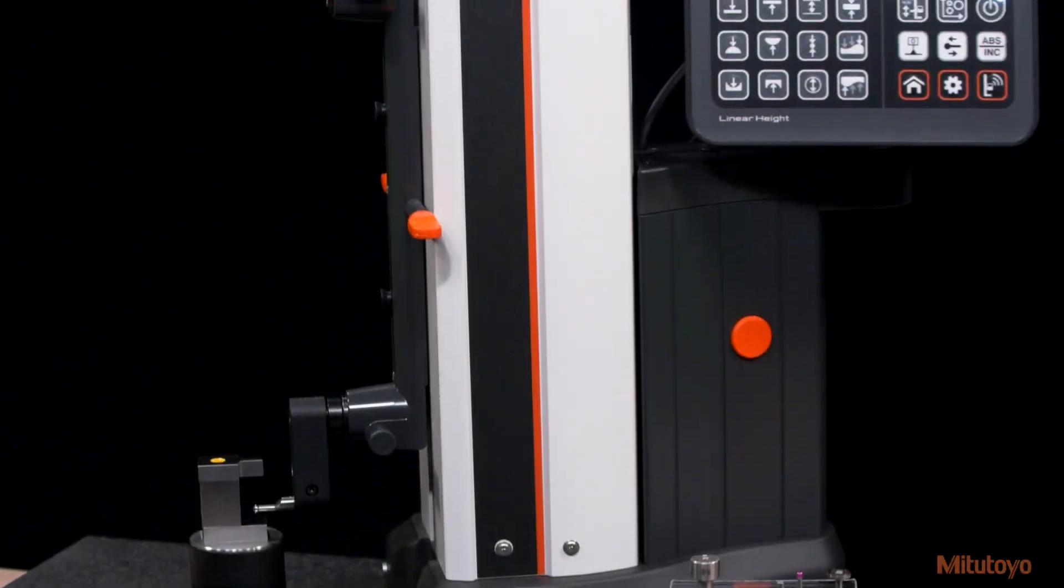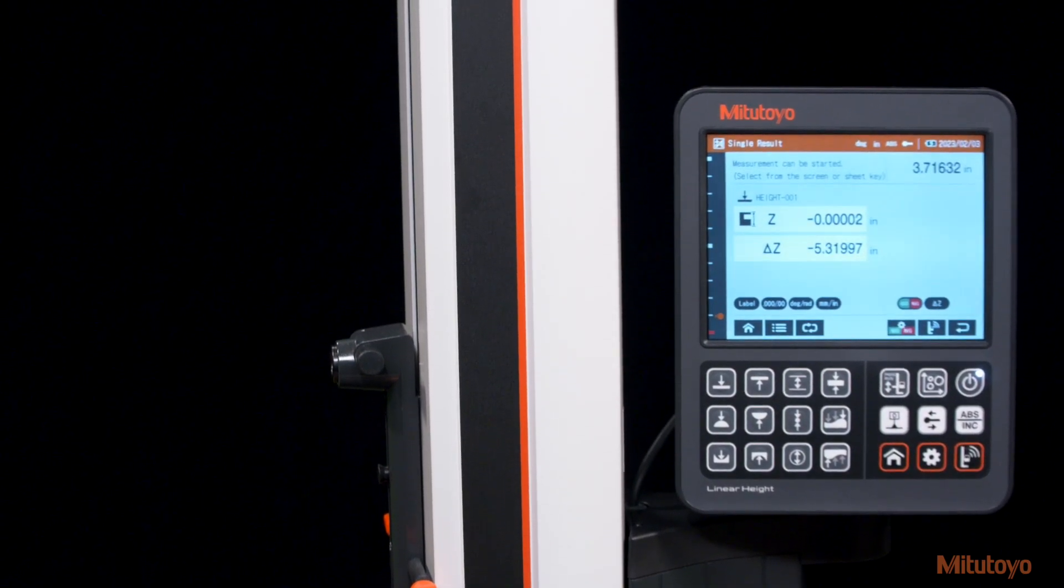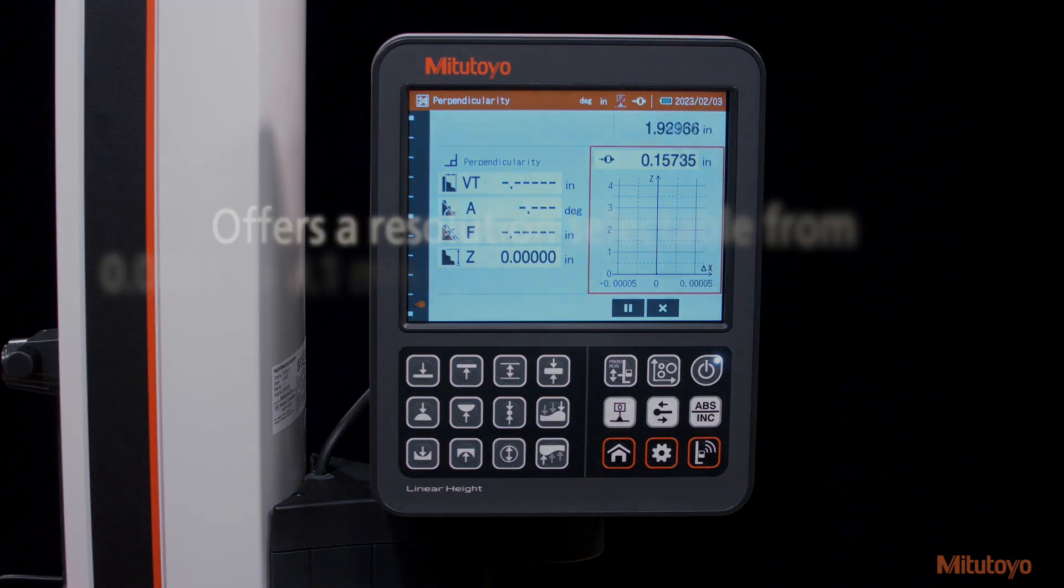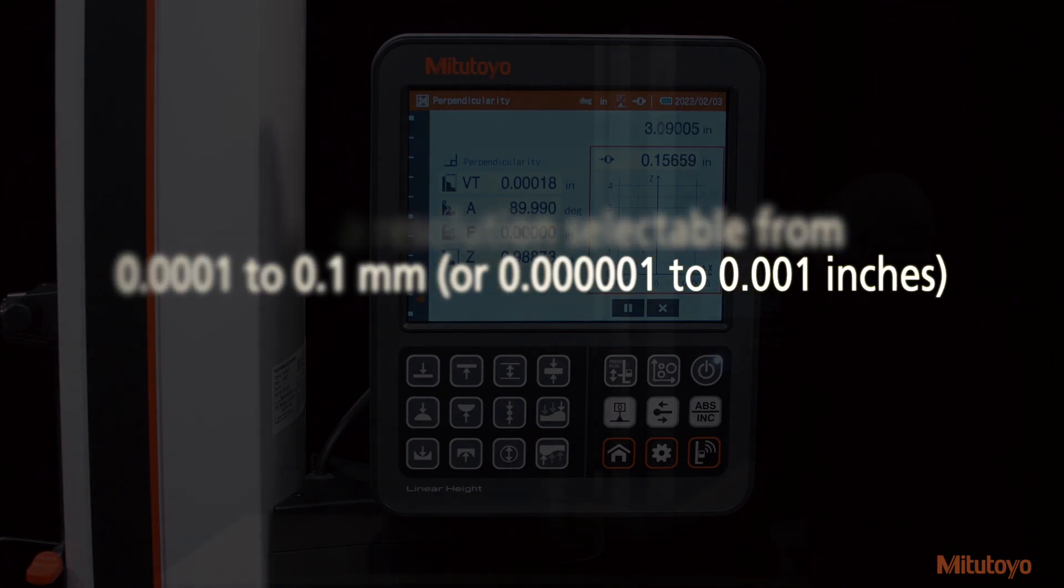Let's take a quick look at what makes the LH600F the most accurate height gauge in precision metrology. The heart of the LH600F precision lies in its photoelectric incremental encoder, allowing for ultra-fine measurement increments even in shop floor applications.